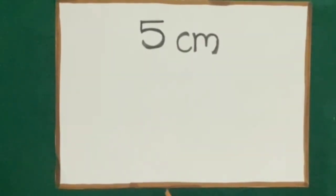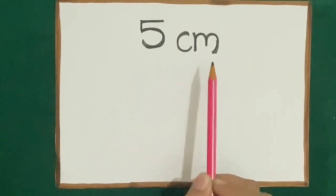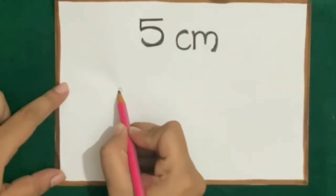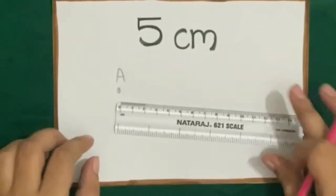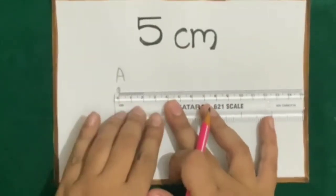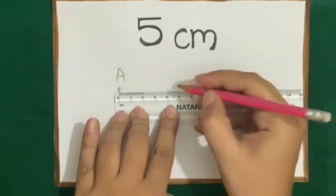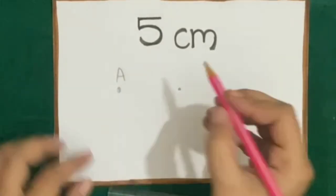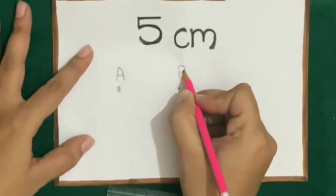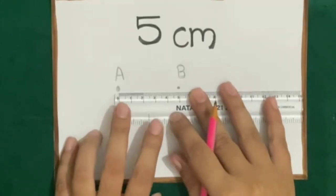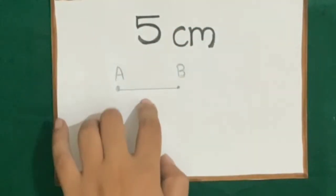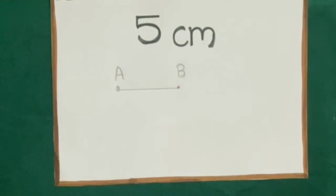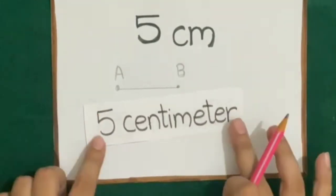Now the next question gives a length of 5 centimeters and we have to draw a line of 5 centimeters. First we will mark a point A on the page, then place the 0 point at A and mark another point at 5 centimeters. We name the second point B, join the two points by drawing a line, and write 5 centimeters as the length.